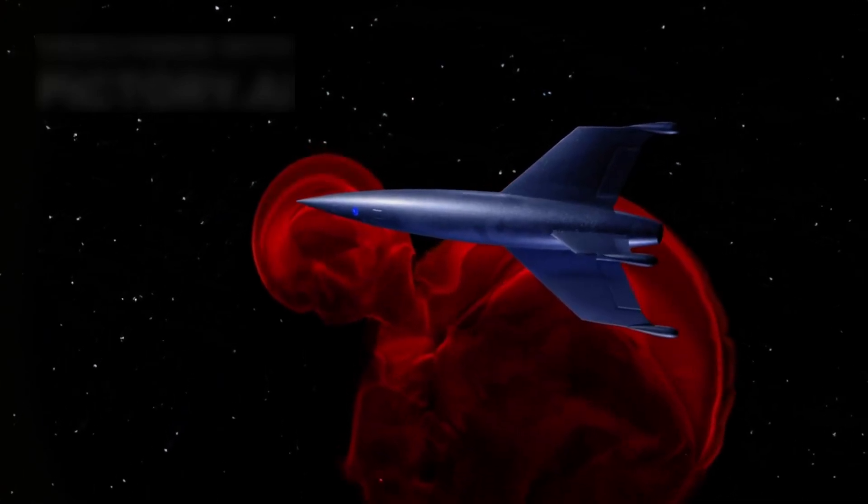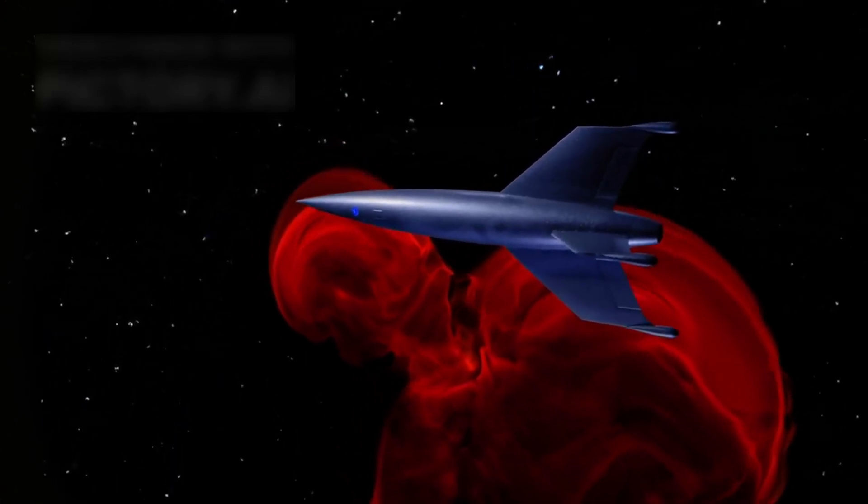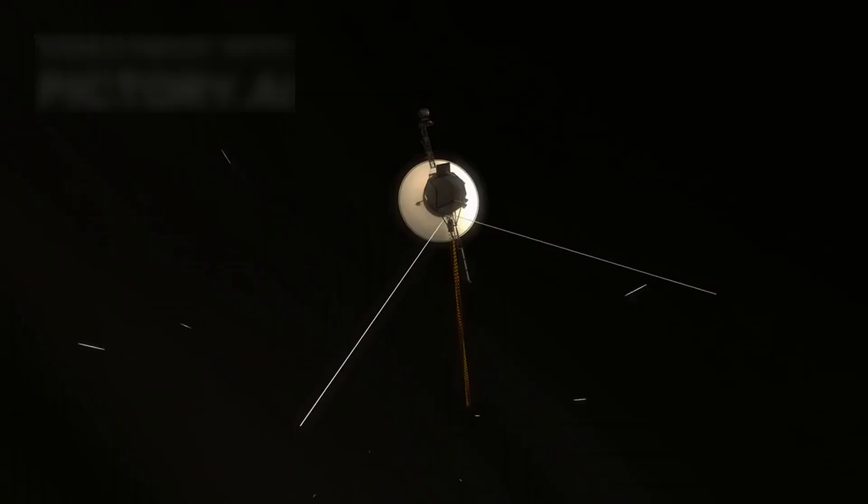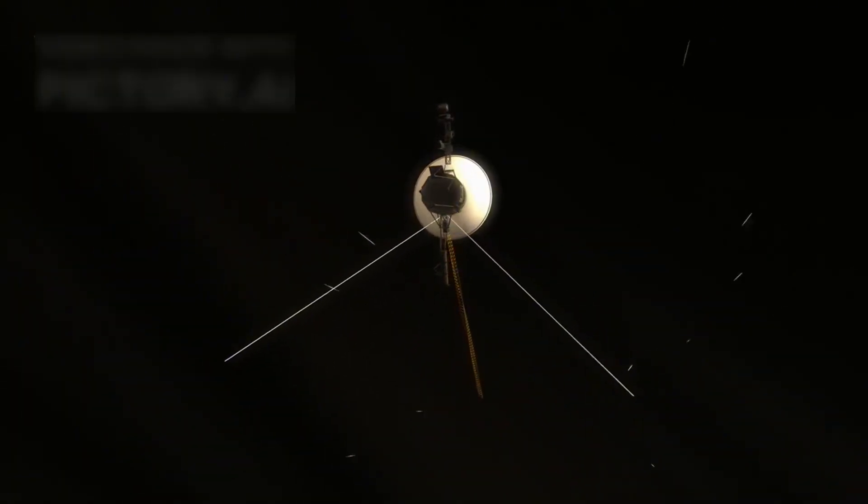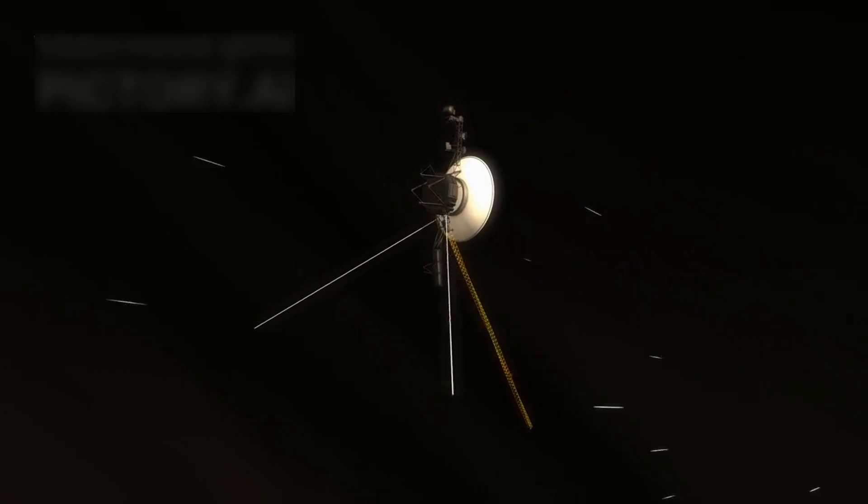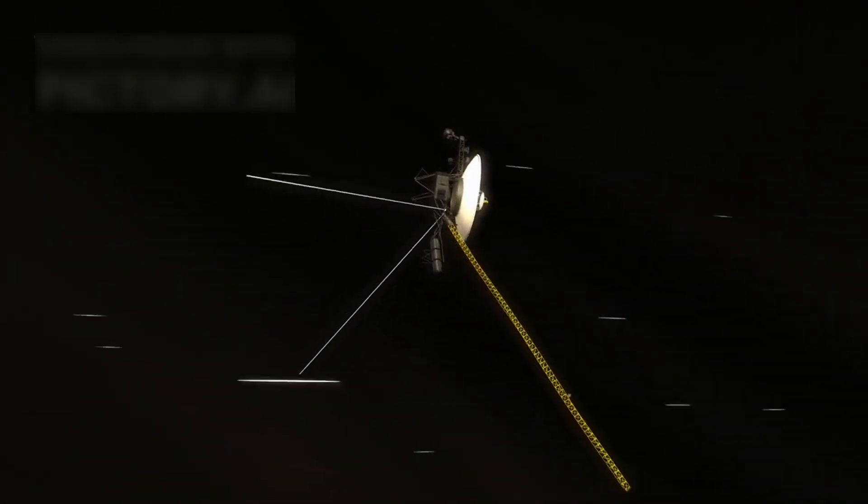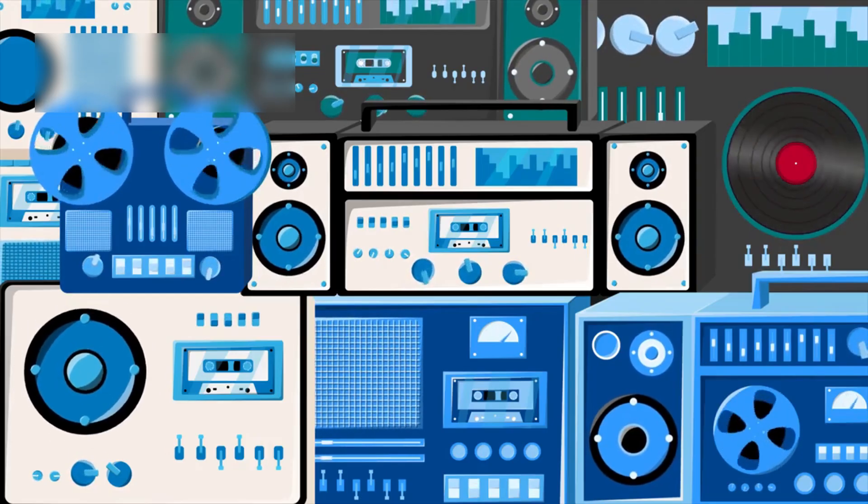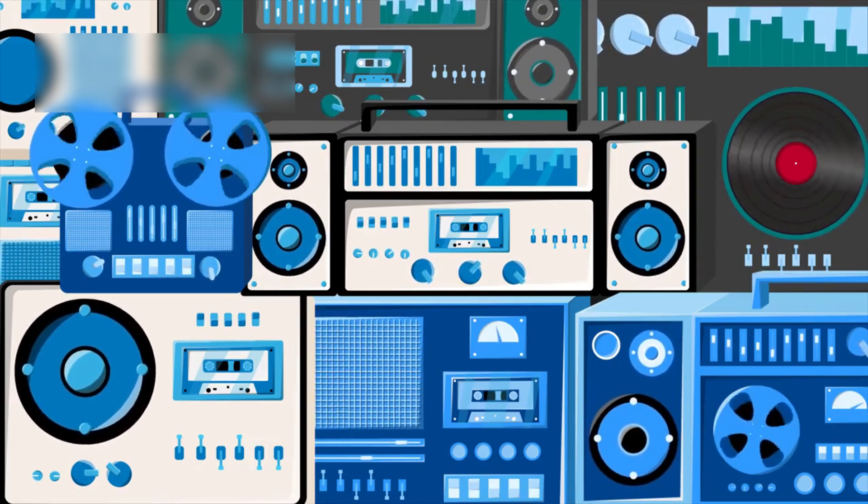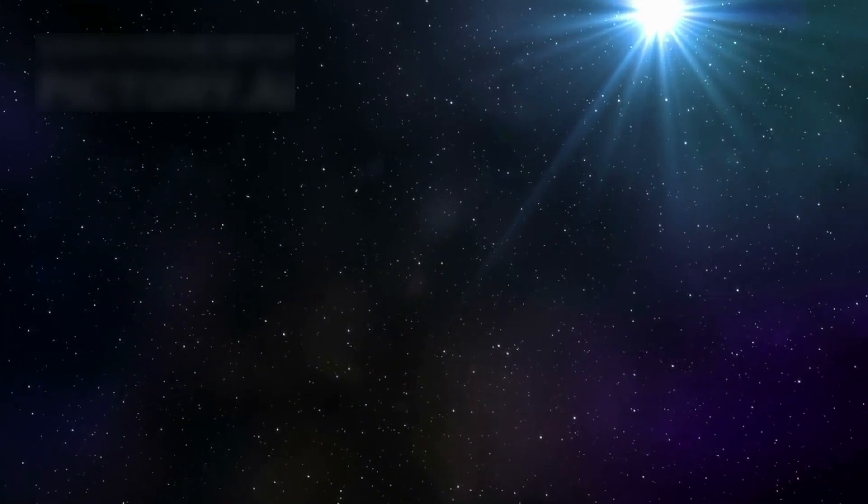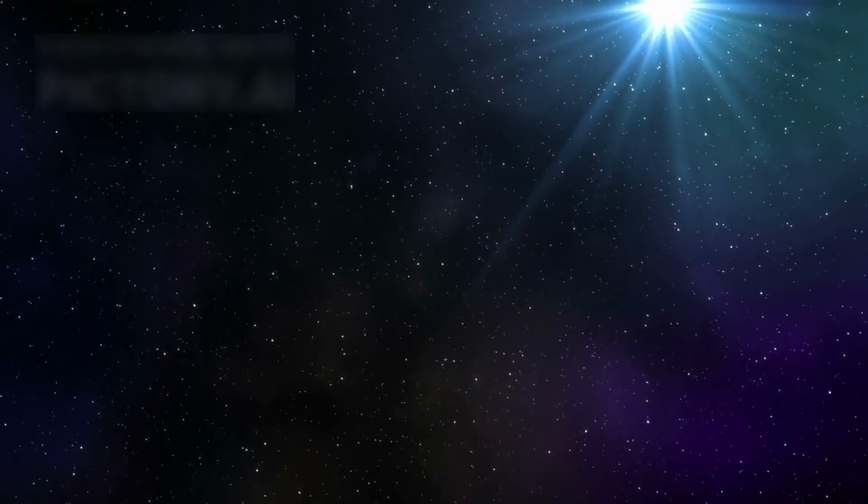Fifty years ago, humans launched a small spacecraft into deep space. That machine, Voyager 1, was barely more advanced than a calculator. It ran on cassette tapes and old programming never meant to last forever. Yet somehow, it's still working, still sending signals, still watching the stars.